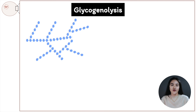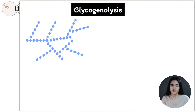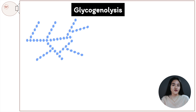In this video we're going to cover glycogenolysis, or the breakdown of glycogen. At the end of this video you'll understand how glycogen is used and broken down to glucose to produce energy. We're going to cover the steps involved, when and how it occurs, and how glucose is transported out of the liver.